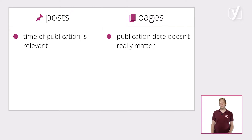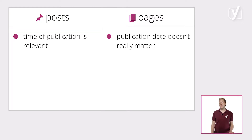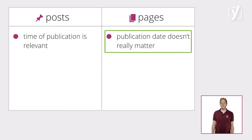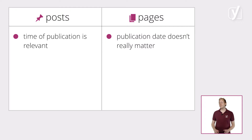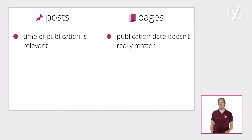Firstly, posts are content where the time of publication is relevant. For pages, the publication date doesn't really matter. To really understand this, let's remember what WordPress started as — a blogging platform. On a blog, there is a clear distinction between these types of content.